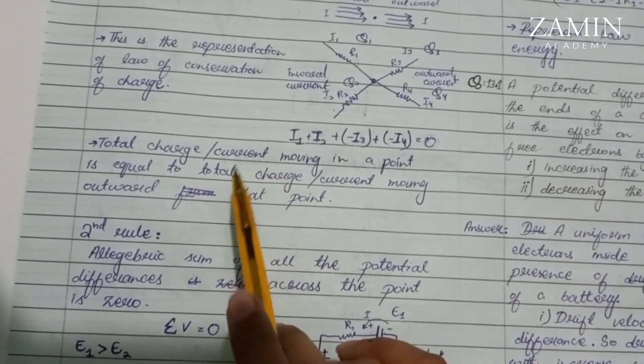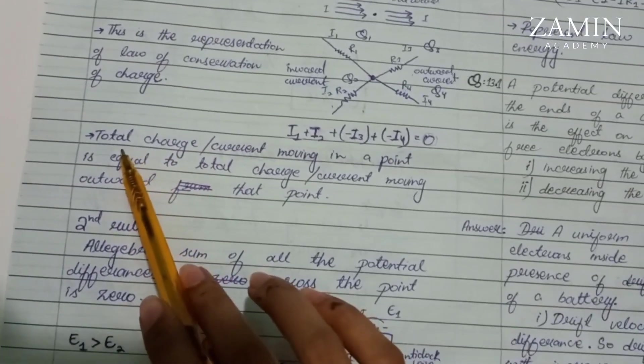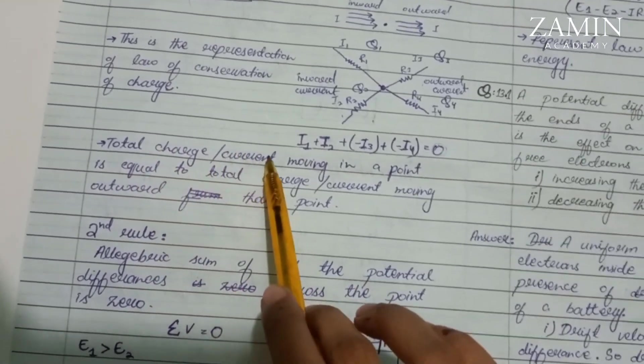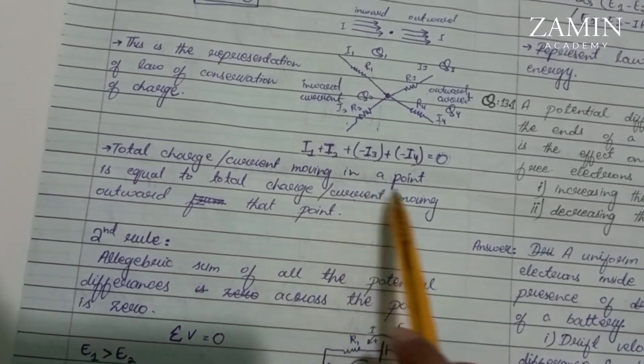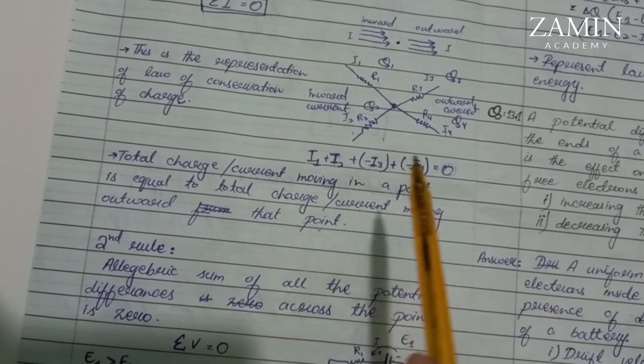If we write it clearly, then we can write: total charge or current moving into a point is equal to total charge or current moving out of that point. This is our first rule.